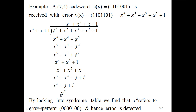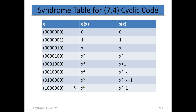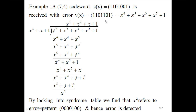The x⁴ cancels, giving x³ + x² + x + 1. Multiplying 1 by the divisor gives x³ + x + 1, and the remainder is x². Since we have a non-zero remainder, there is an error in the received code. Looking at the syndrome table, x² corresponds to error bit location 3. Since the third bit is 1, we change it to 0, and the corrected codeword is 1 1 0 1 0 0 1. That is how decoding, error detection, and correction are performed.